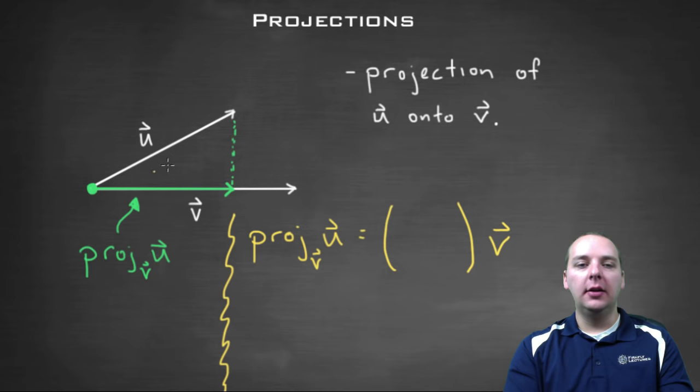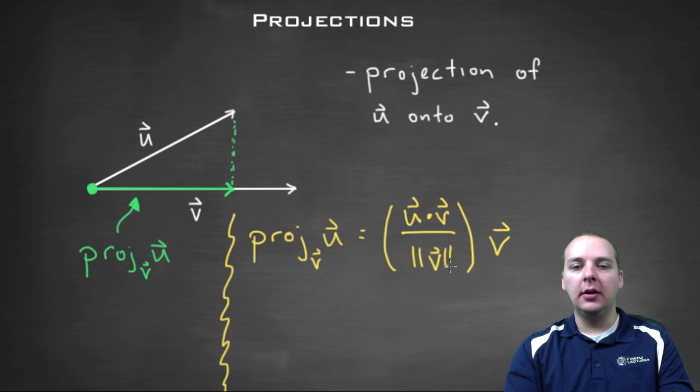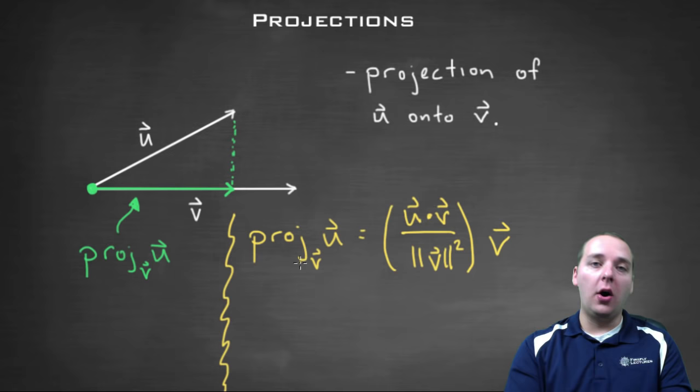Now what the scalar is, is a little less intuitive. Let me give it to you. It's u dot v divided by the magnitude of v squared. So you might want to jot this formula down and commit it to memory. But this is your formula for a projection. Projecting one vector onto another vector.